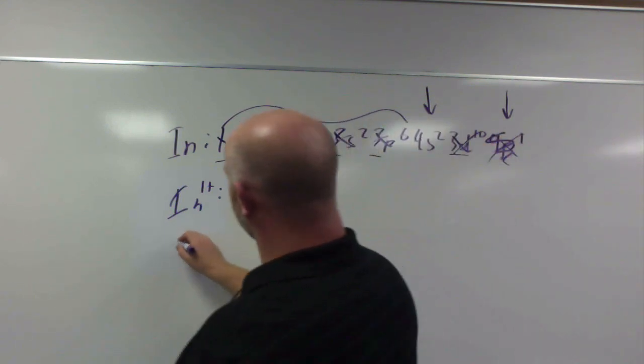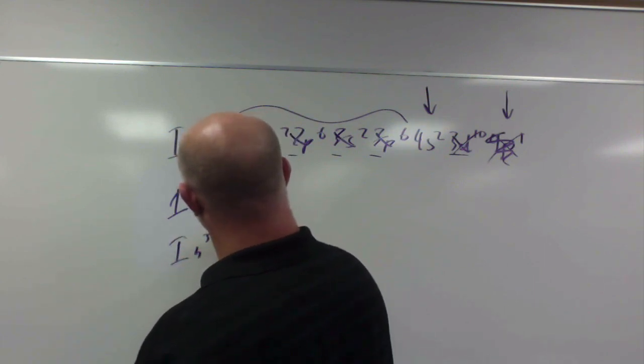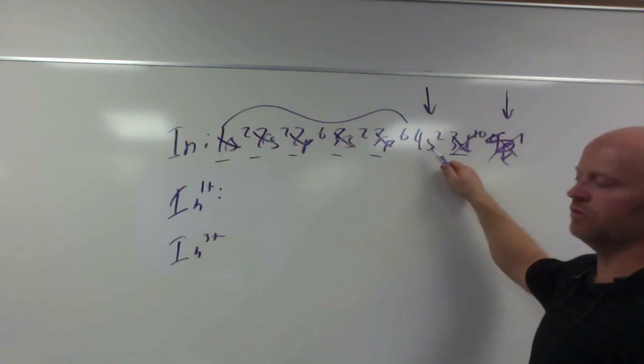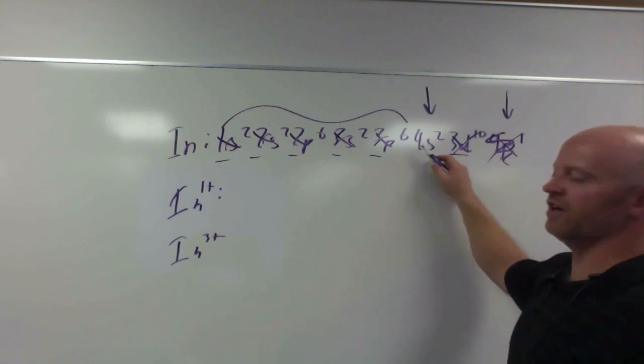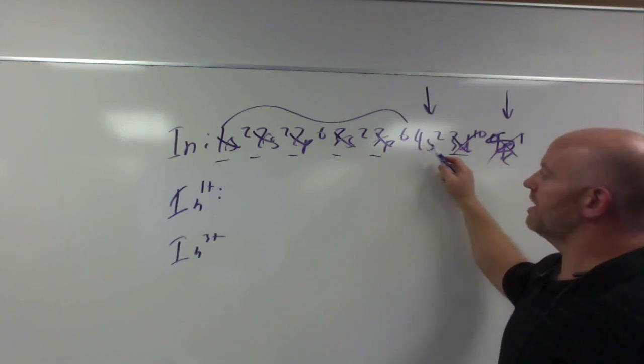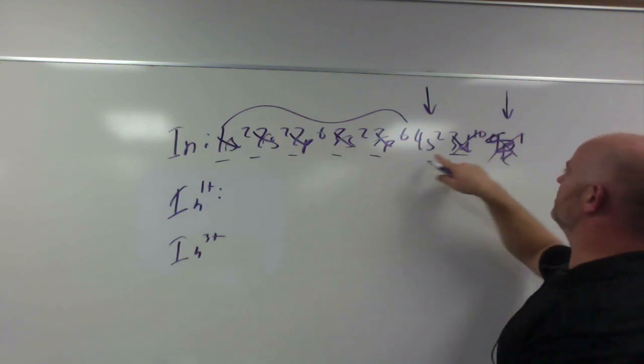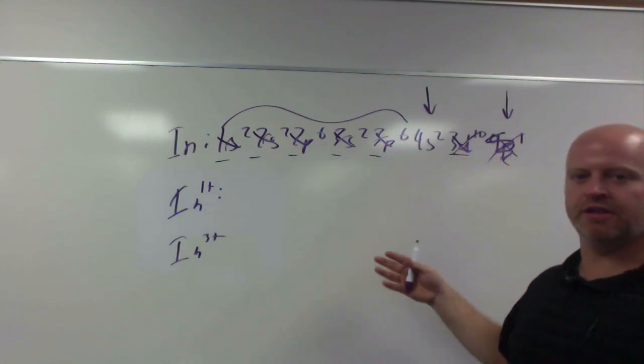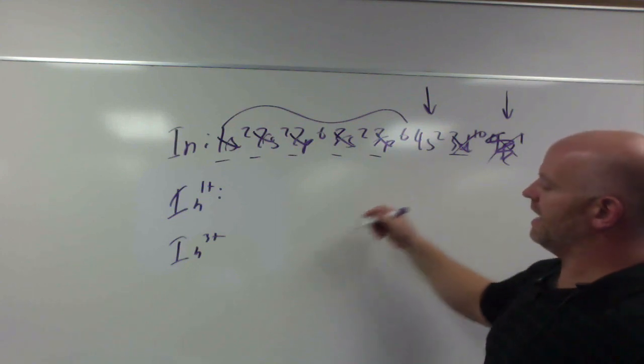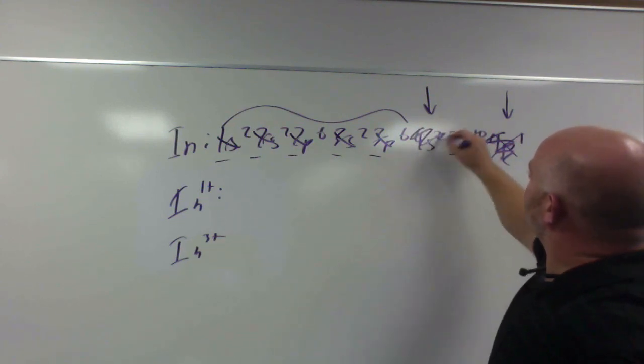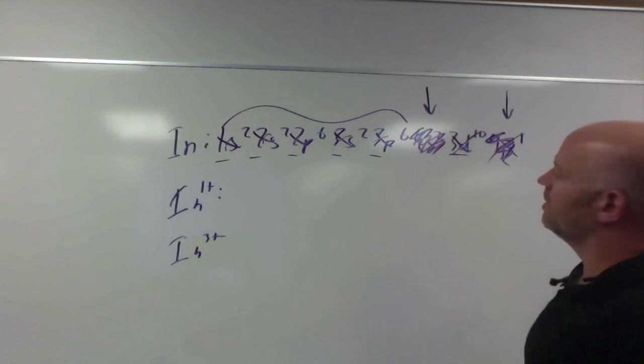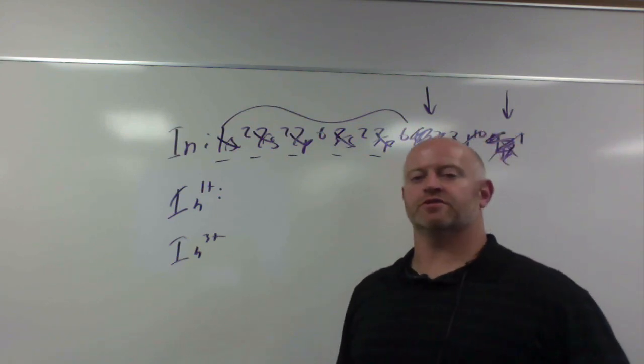But indium can also become a 3 plus, because even though this is a full orbital, wouldn't it be great if we got rid of the fourth energy level altogether? So what can happen is you have a full 1, a full 2, and even your third energy level with that d is completely full. So by ionizing to a 3 plus, again getting rid of these electrons, you also have an advantage in terms of stability.